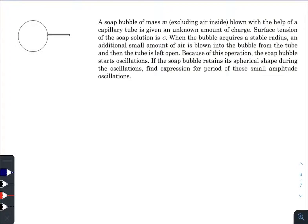What is up everyone, I hope all of you are doing great. In today's question we have a soap bubble of mass m, excluding air inside, blown with the help of a capillary tube. Surface tension of the soap solution is sigma. When the bubble acquires a stable radius, an additional amount of air is blown.